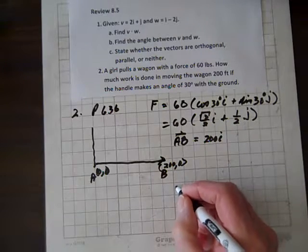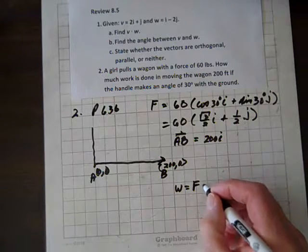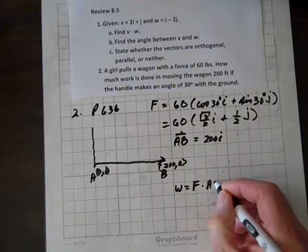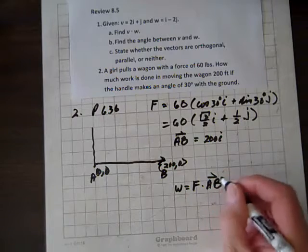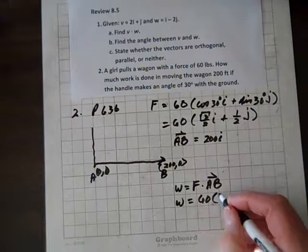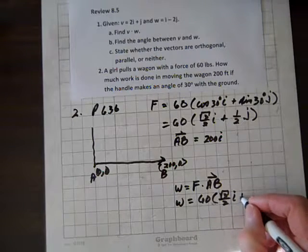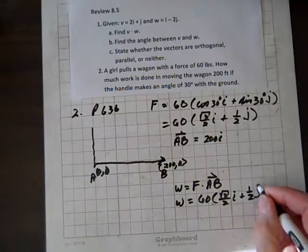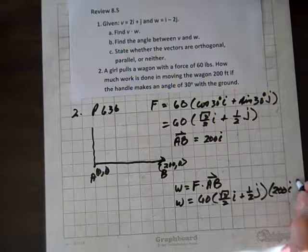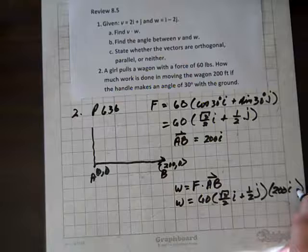to find the work, work equals force times dotted with the vector AB. So work equals 60, and times root 3 over 2 i plus 1 half j dotted with 200i, and plus 0j. So that's why you don't see a j showing up here. So when we dot that,